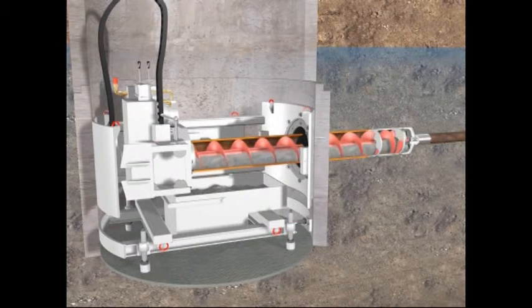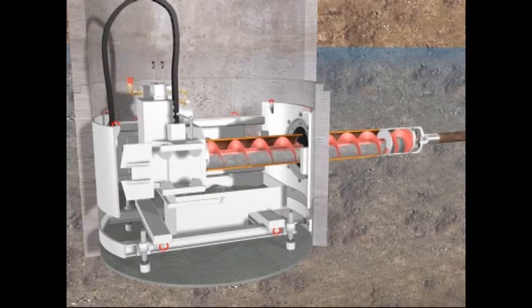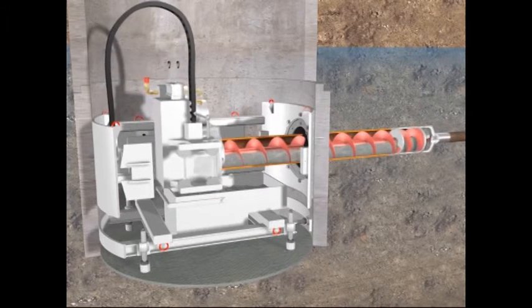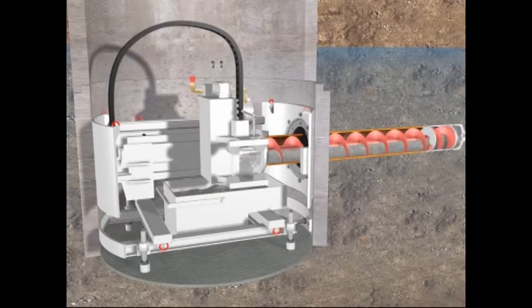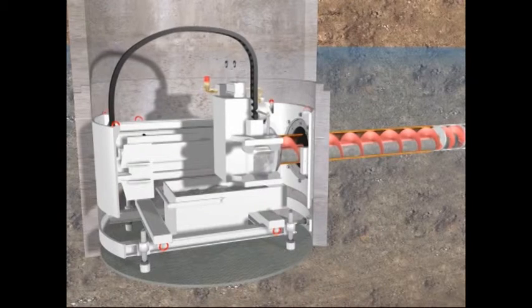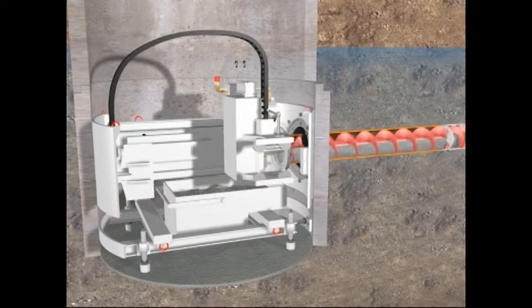The pilot rods are then followed by a reamer coupled to steel casings with augers inside. The ground is excavated by a special cutting head on the reamer and transported by the augers back to the muck skip in the working shaft.